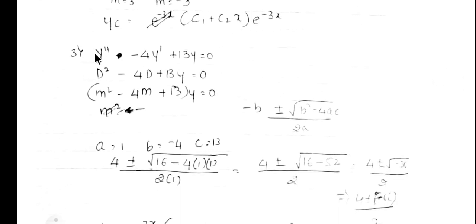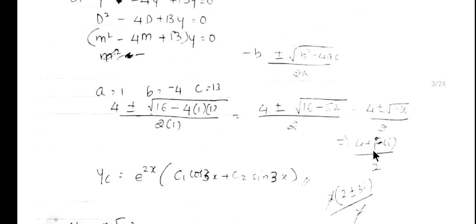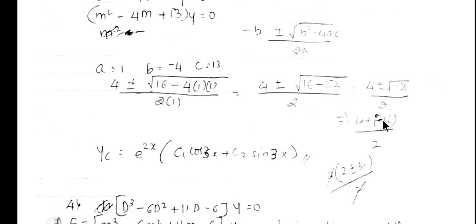Example 3: y'' - 4y' + 13y = 0, written as (D² - 4D + 13)·y = 0. The auxiliary equation is m² - 4m + 13 = 0. This cannot be factorized, so we apply Sridhar's formula: m = (-b ± √(b²-4ac)) / 2a, with a=1, b=-4, c=13. After simplification, m = (4 ± √(-36)) / 2 = (4 ± 6i) / 2 = 2 ± 3i. The roots are complex, so the complementary solution is yc = e^(2x)·(c1·cos(3x) + c2·sin(3x)).